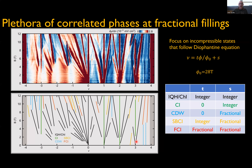We can characterize each feature by its slope—in units of flux quantum—and its intercept, distilling the data into the phase diagram shown here. Black features are integer quantum Hall or simple Chern insulators, showing a Landau fan near charge neutrality. Blue and yellow features—symmetry-broken Chern insulators—have integer slope but fractional intercept. The red ones, where I'm headed, are the fractional Chern insulators: they have a fractional slope meaning a fractional Chern number, and also a fractional intercept.